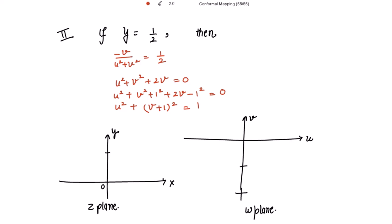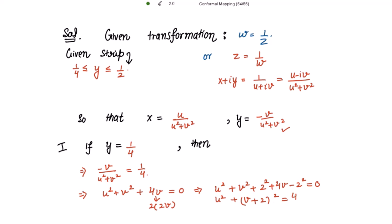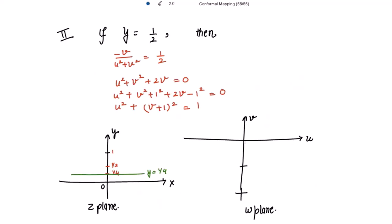To plot these in the z-plane: if this is 1 unit and half a unit, then 1/4 is marked accordingly. The line y = 1/4 is a straight horizontal line. Its image in the w-plane is u² + (v + 2)² = 4, which is a circle with center (0, -2) and radius 2. On the w-plane axes, plotting the origin, with -1 and -2 on the vertical axis, the center is at (0, -2) with radius 2.